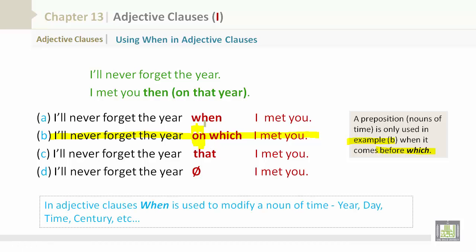In adjective clauses, when is used to modify a noun of time, such as the year, day, time, century.